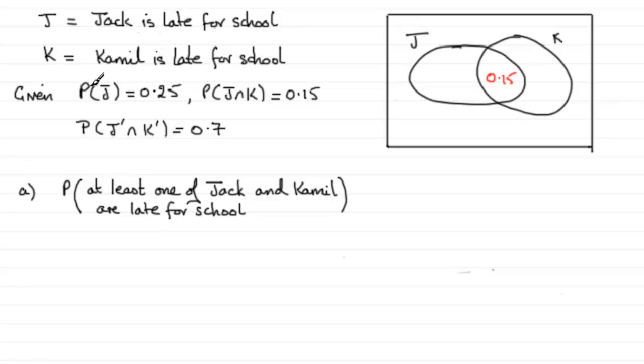Now that means, now that we've got probability J equals 0.25, that covers those two regions, then we've just got to make this add up to 0.25. So clearly this has got to be 0.1.